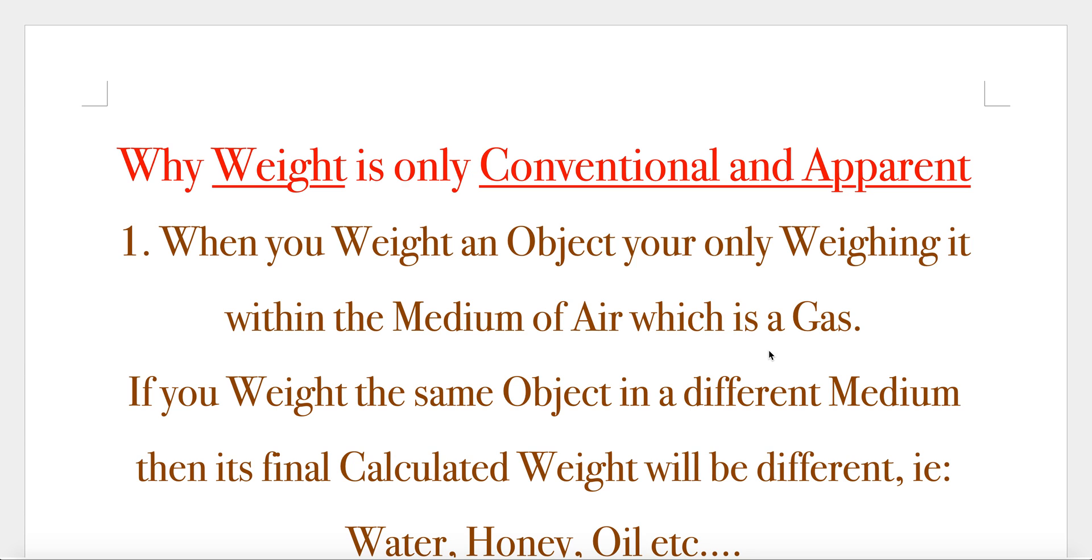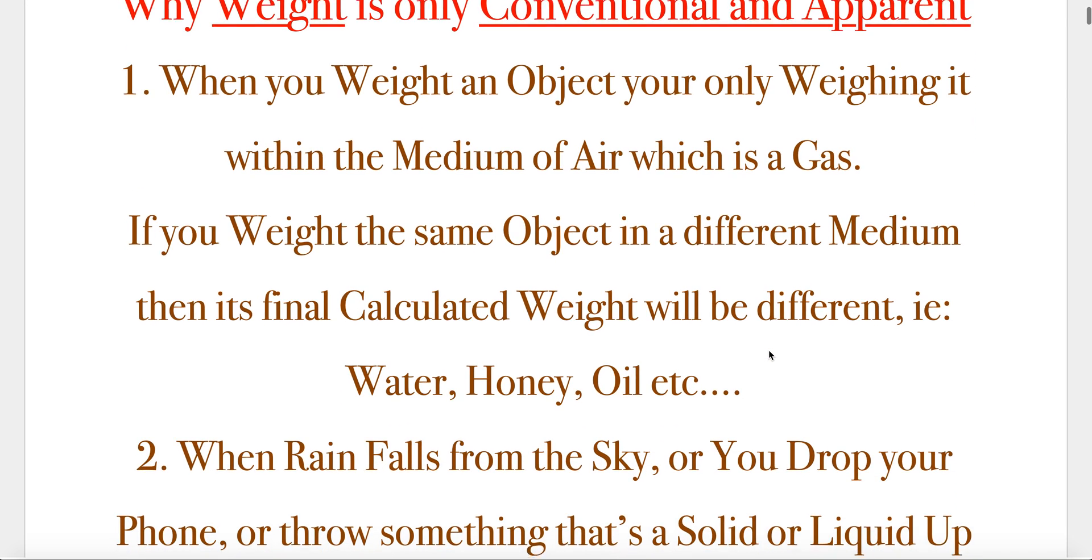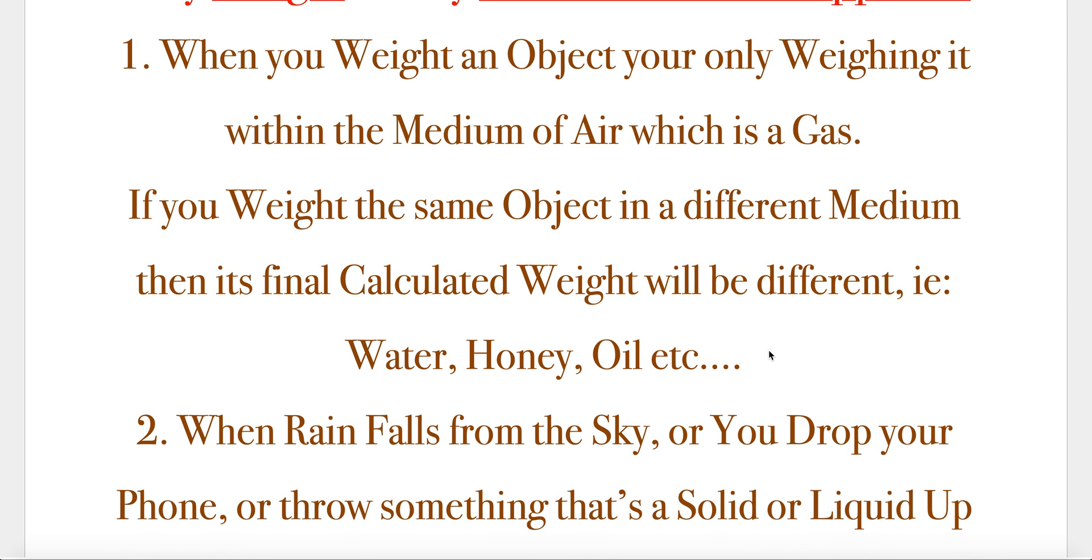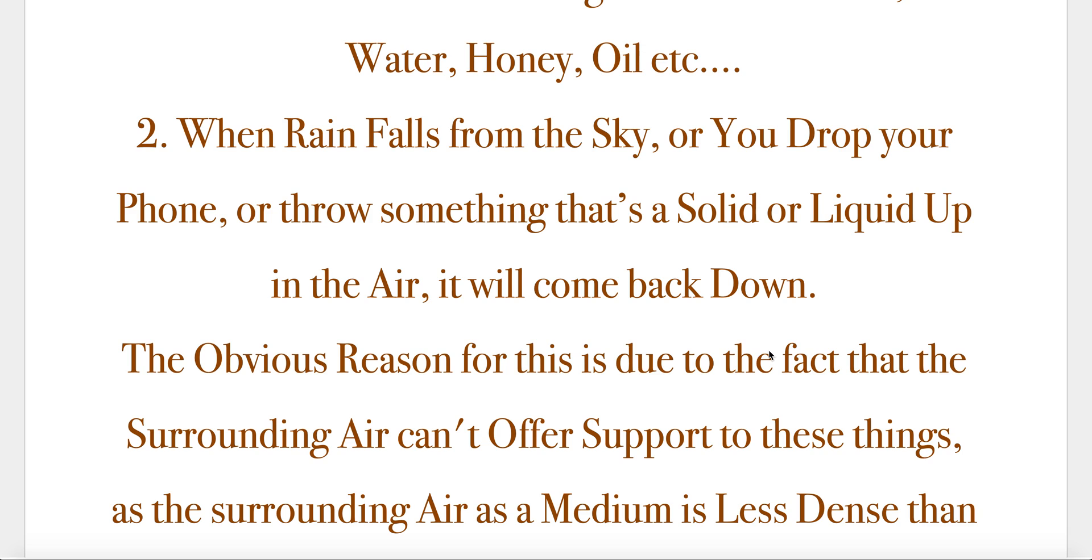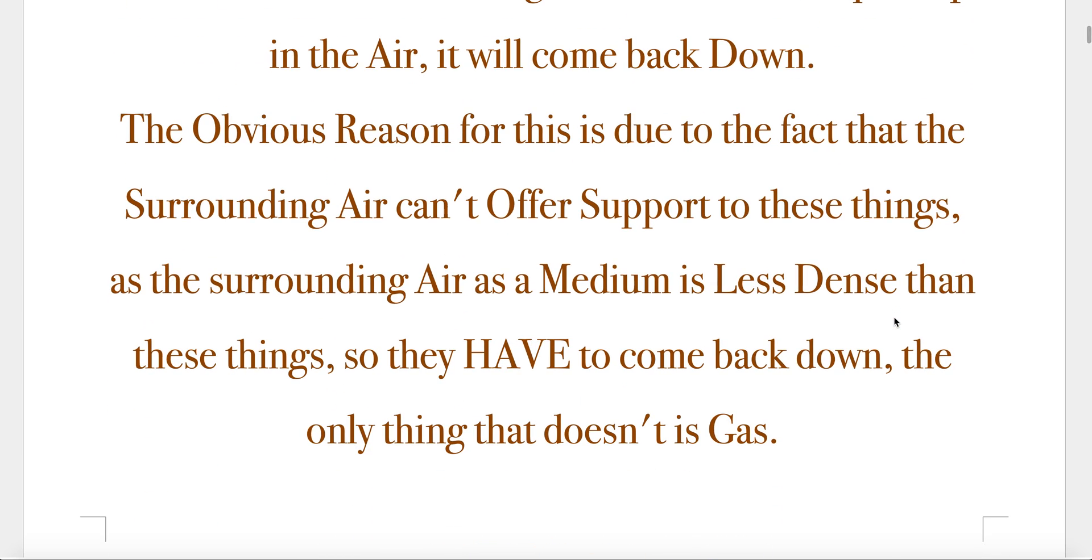When you weigh an object, you're only weighing it within the medium of air, which is a gas. If you weigh the same object in a different medium, then its final calculated weight will be different, i.e. water, honey, oil, etc. When rain falls from the sky or you drop your phone or throw something that's a solid or liquid up in the air, it will come back down. The obvious reason for this is due to the fact that the surrounding air can't offer support to these things as the surrounding air as a medium is less dense than these things. So they have to come back down.